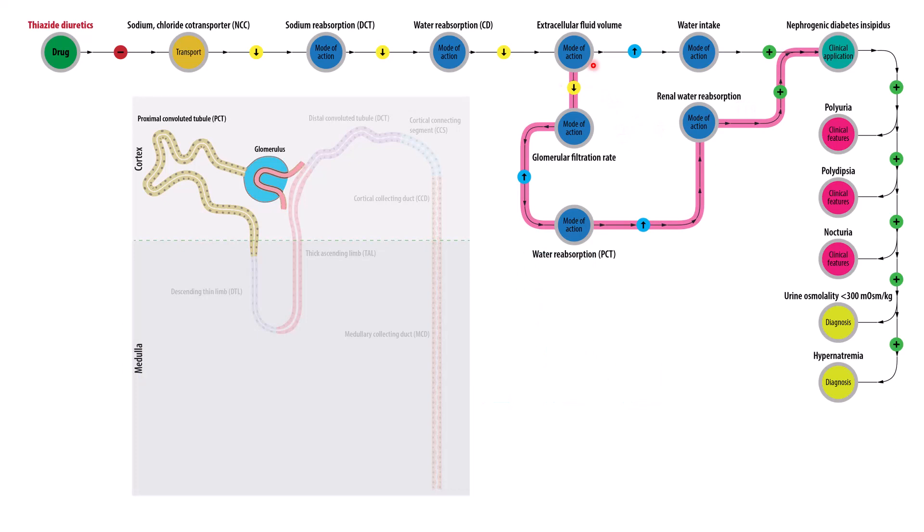Likewise, it increases water reabsorption in the kidney. And that occurs because first and foremost, the decrease in extracellular fluid volume leads to a decrease in the glomerular filtration rate. And when that happens, there's a reflexive increase in water reabsorption along the proximal convoluted tubule. That's what we see right here. So basically, as you slow the flow, you will increase more water being reabsorbed along this segment.